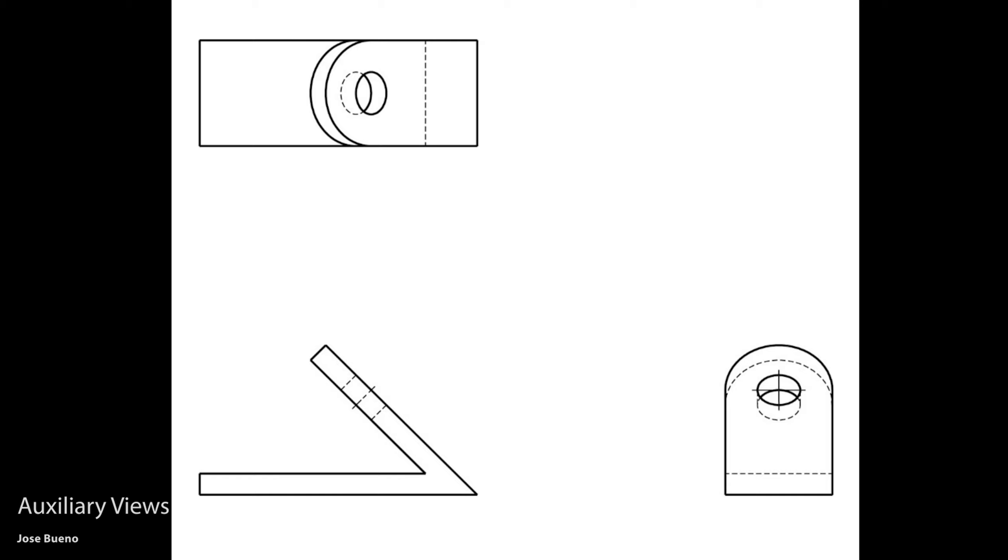Now from each of these different points of view, we can tell that there's a hole in this particular piece. But all three views don't give us a point of view of that face that has the hole head on. We just know that it's there by interpreting the lines that are used to draw it. The hidden lines, the center lines, and in that top view, we can see the obvious boundary of that hole with the object line. But we don't know if this is perfectly round, because we're not looking at it head on.